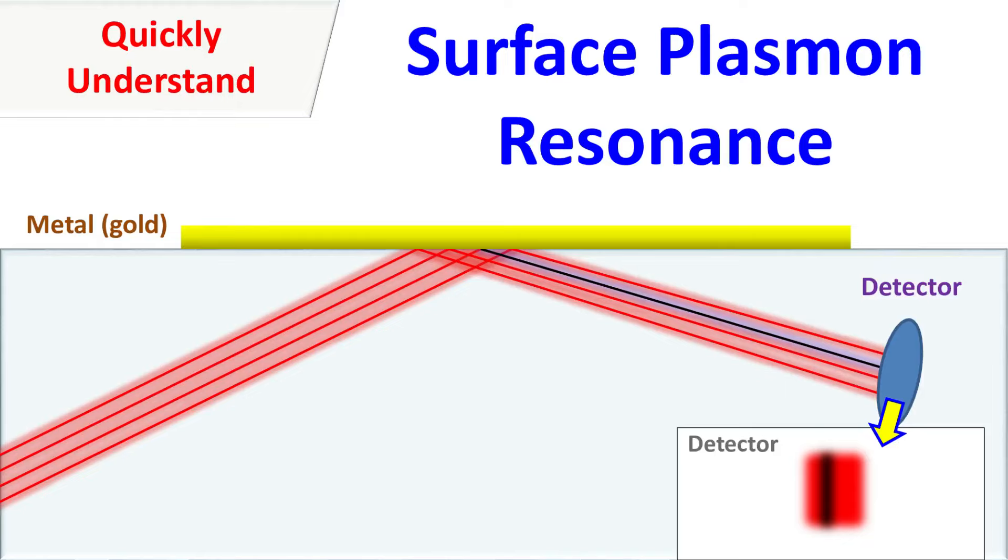Hey guys, Quickback Chemistry Basics here. Let's talk about Surface Plasmon Resonance. Surface Plasmon Resonance is an optical technique used to study and measure molecular interactions in real time.